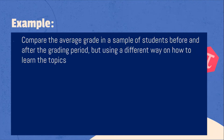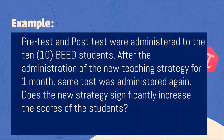An example of the application of t-test dependent: compare the average grade in a sample of students before and after the grading period, but using a different way on how to learn the topics. Another application: pre-test and post-test were administered to 10 BED students. After the administration of a new teaching strategy for one month, the same test was administered again. Question: does the new strategy significantly increase the scores of the students?